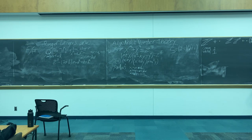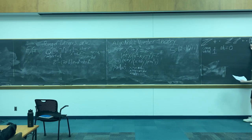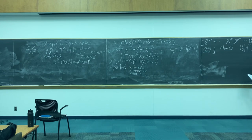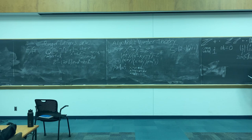Think about zero. In the integers, if AB equals zero, then A equals zero or B equals zero. But in Z², we can have (1,0) times (0,1) equals (0,0) — that's the main difference. We can have two non-zero elements that multiply to equal zero. Each of these is called a zero divisor. Obviously, if we're going to be doing number theory — thinking about division, factorization, primes, etc. — we want it to behave fundamentally like the integers.